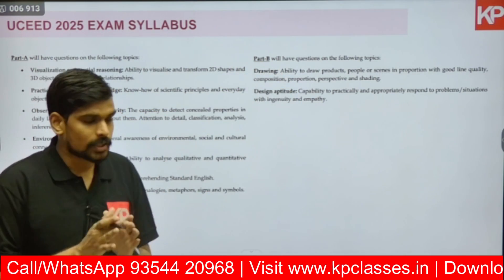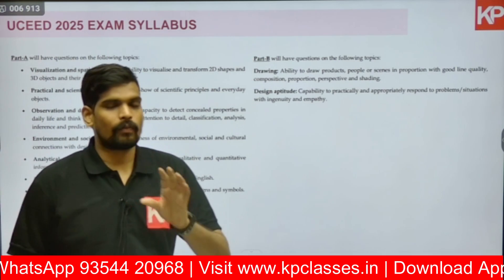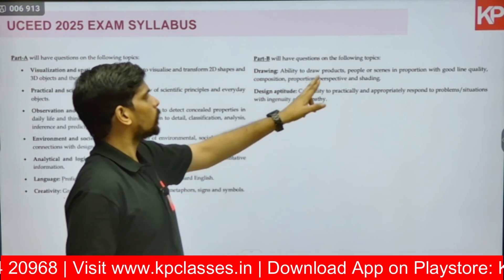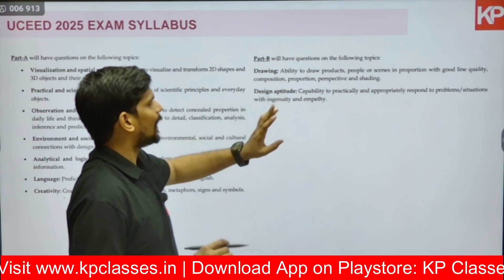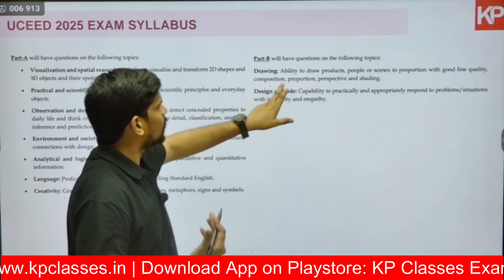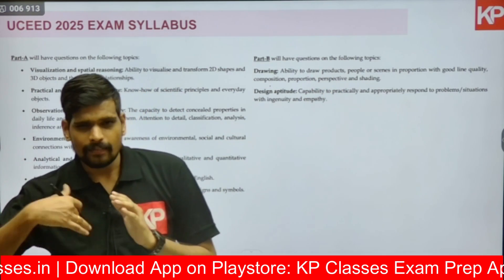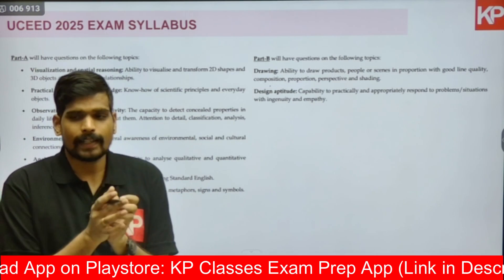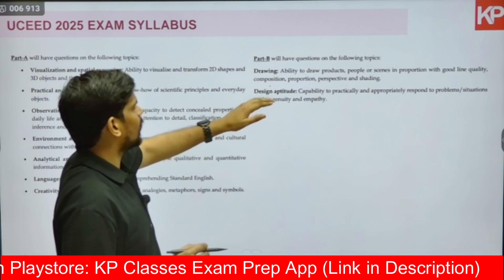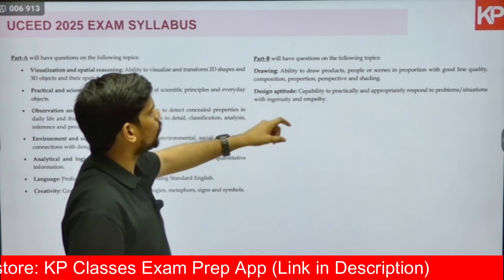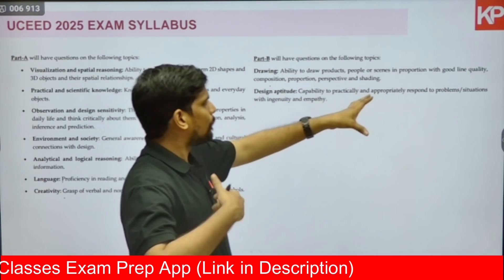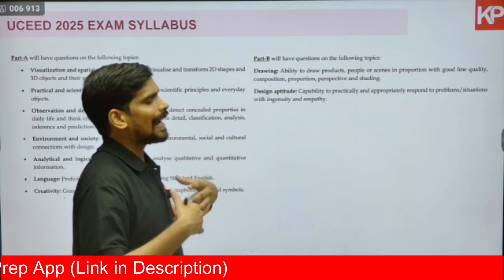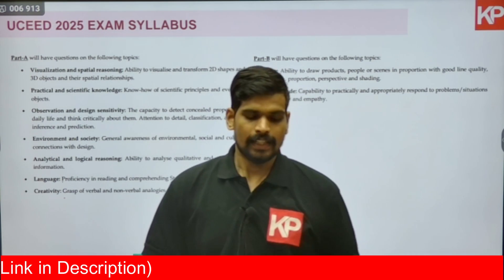For Part B, the official syllabus covers two areas corresponding to the two questions. The first question is from drawing, testing your ability to draw products, people, and scenes with good line quality, composition, proportion, perspective, and shading techniques. The second question focuses on design aptitude, assessing the candidate's capability to practically and appropriately respond to problems or situations with ingenuity and empathy.